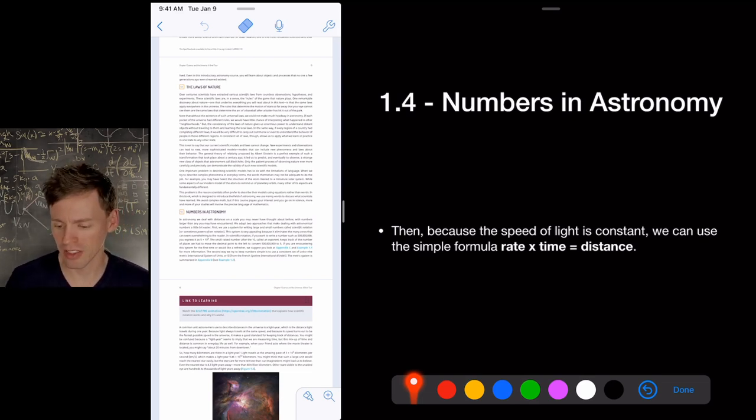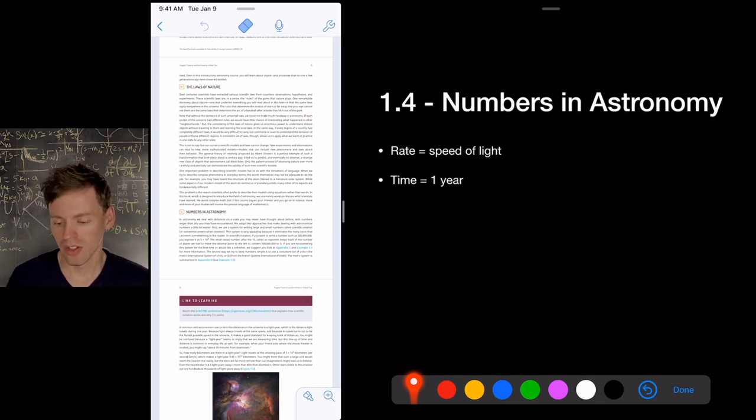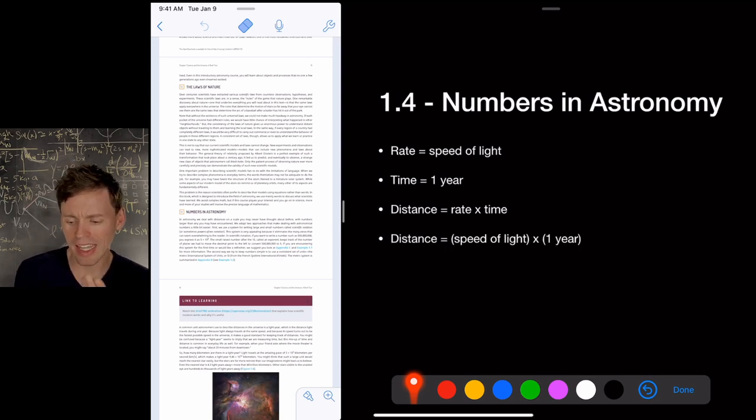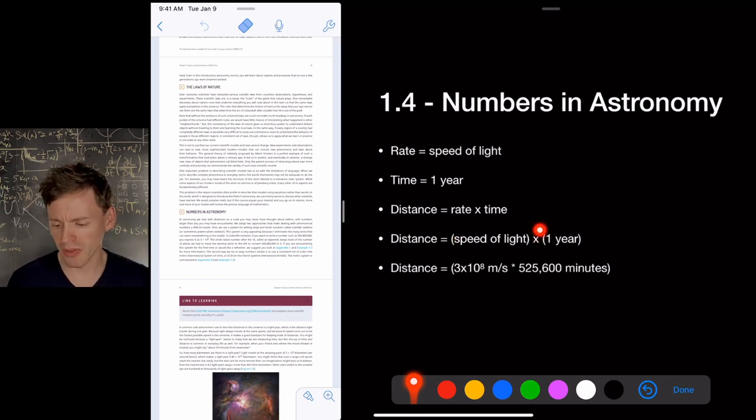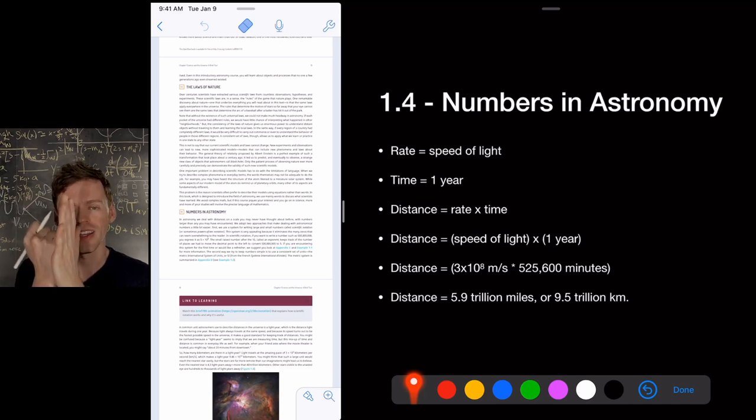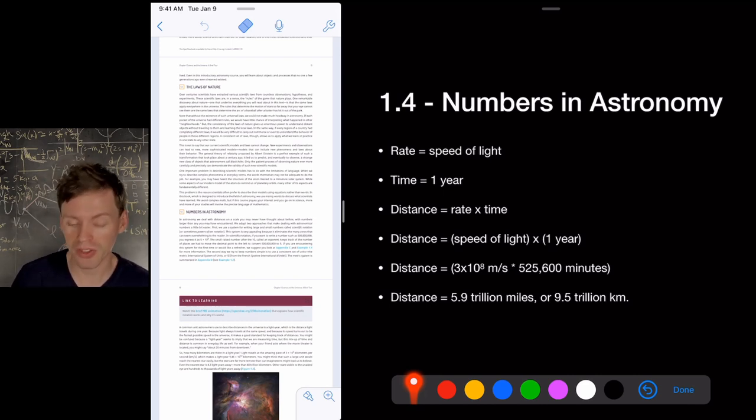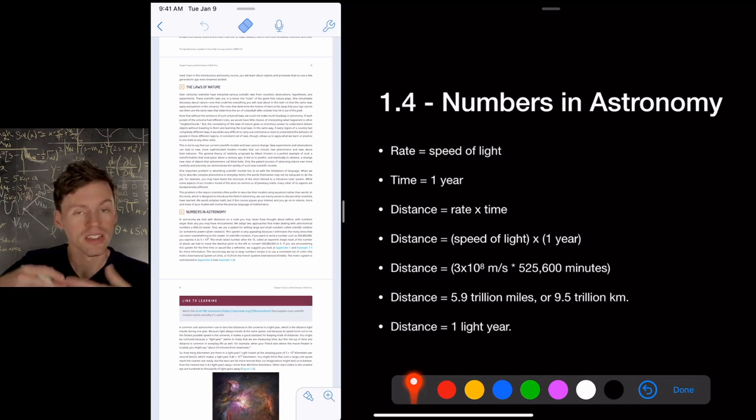Because the speed of light is constant, this is a wonderful feature. We have looked for evidence that it's not so far. We haven't found any. So the speed of light is constant because light is constant. Let's use the formula rate times time is distance. So this rate in this equation is speed of light. The time, let's take one year. Okay. Then distance is rate times time. The distance then would be the speed of light times one year, rate times time. Okay. Our rate is the speed of light. Our time is one year. We're trying to figure out how far light would travel in one year. So we're going to take the speed of light, three times 10 to the eighth meters per second. We're going to multiply it by one year, 525,600 minutes. Okay. That gives you 5.9 trillion miles.